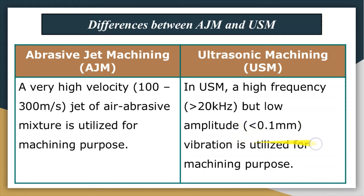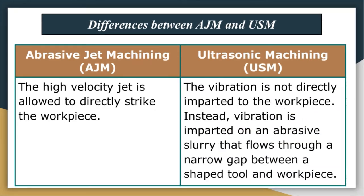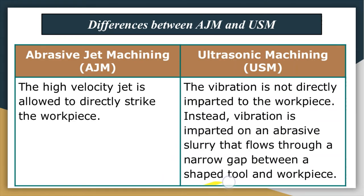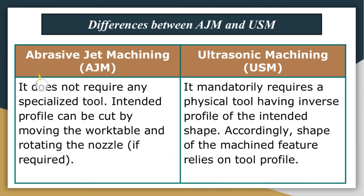In abrasive jet machining, the high-velocity jet is allowed to directly strike the workpiece. But in ultrasonic machining, the vibration is not directly imparted to the workpiece; instead, the vibration is imparted on the abrasive slurry that flows through the narrow gap between the shaped tool and the workpiece.